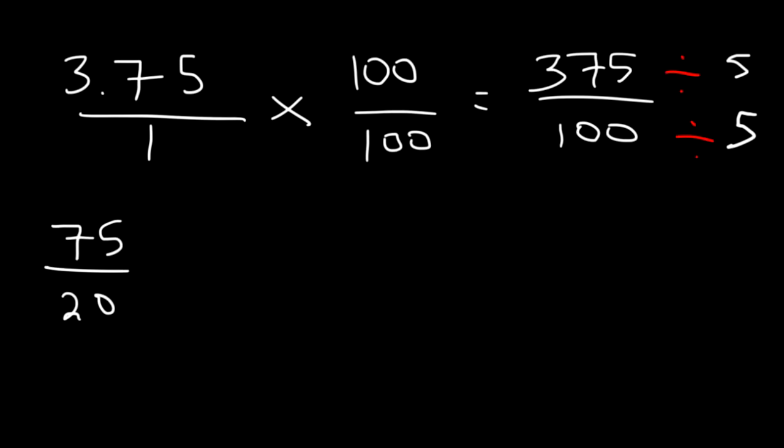So, now notice that we can divide it by 5 again. 20 divided by 5 is 4. 75 divided by 5 is 15. So, the final answer is 15 divided by 4. That's equal to 3.75.